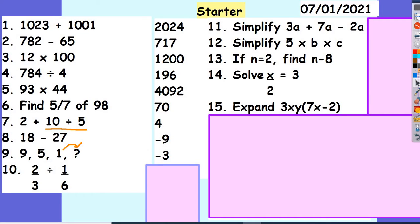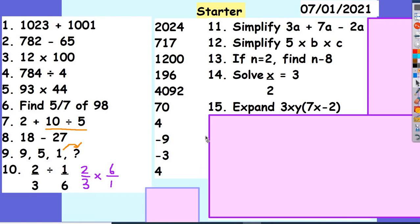2 thirds divided by 1 sixth — I need to use keep, flip, change. I keep my first fraction as 2 thirds, I flip my second fraction so it becomes 6 over 1, and I change my sign to a multiply. I've now got 2 times 6 on the top, which is 12, and 12 divided by 3 gives me 4.